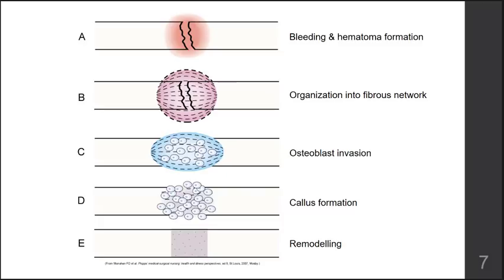Sometimes a procallus will disappear. In other cases, it can calcify — the collagen can become bone — and then we get actual callus formation. A callus is the bony healing tissue that forms around the ends of a broken bone. Depending on how large the callus is, it can actually be palpated. For instance, if somebody broke a bone as a child, as an adult you might be able to feel the callus still present. Finally, bone remodeling occurs, as discussed on the previous slide.